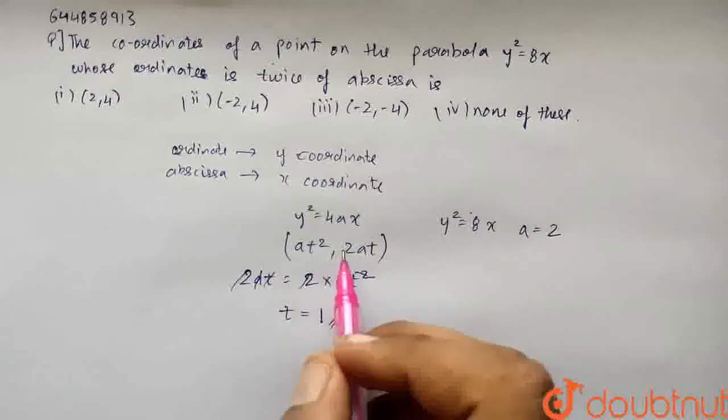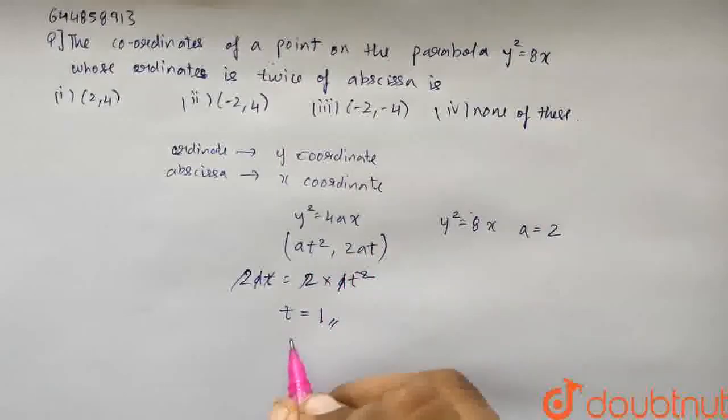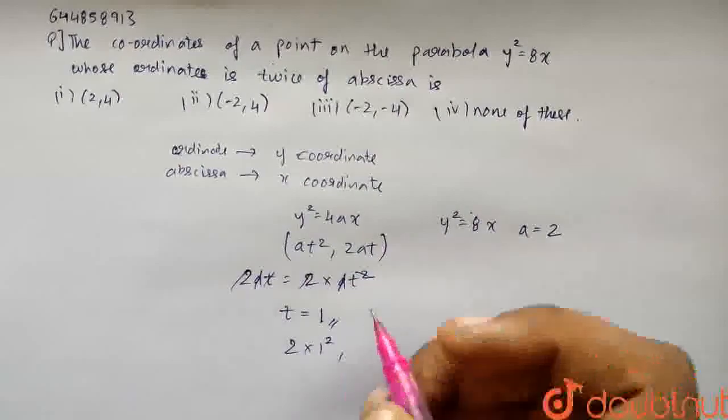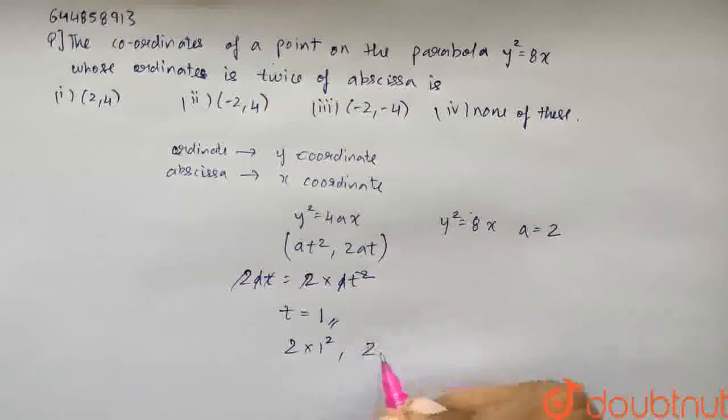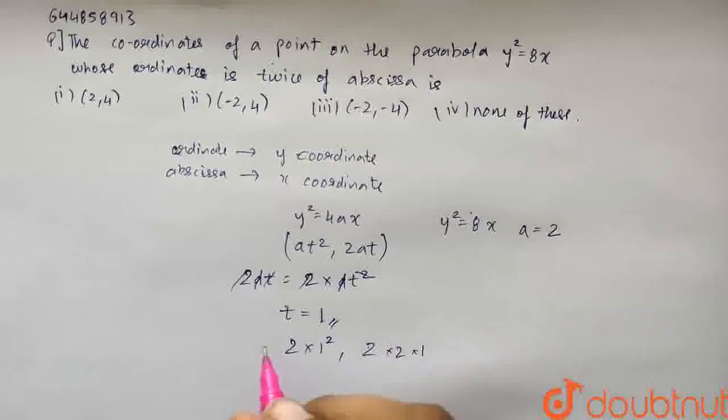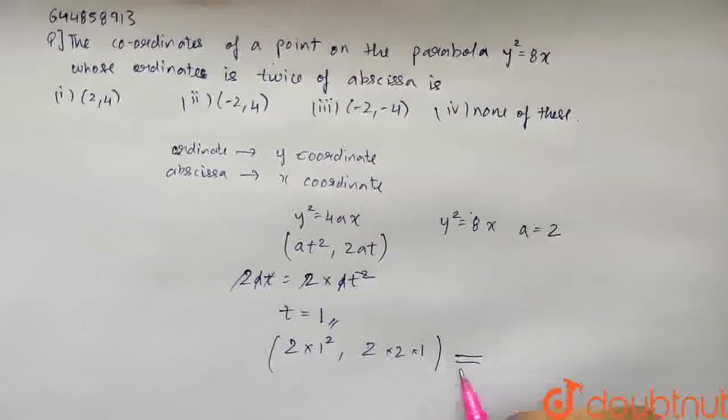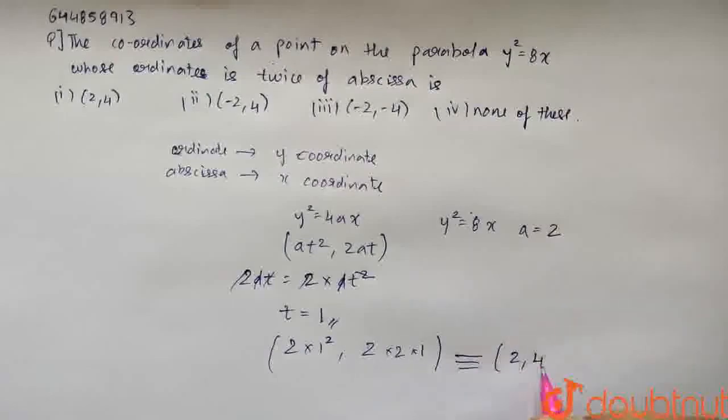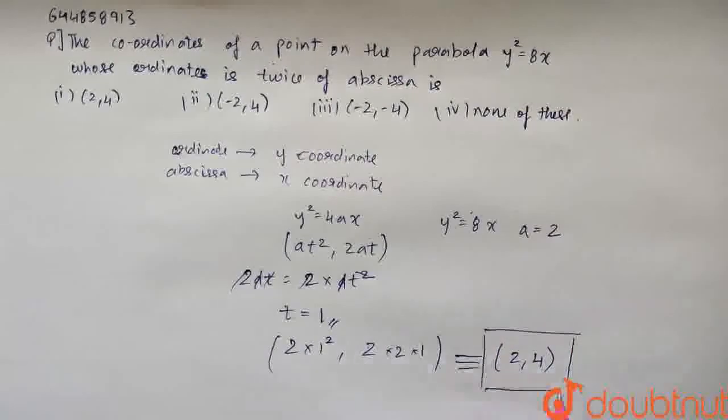We will have to find this point. It is a is 2, so 2 times 1 square, 2 times a is also 2 and t is 1. So the coordinates are given as 2, 2 times 2 is 4.